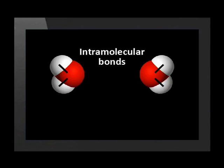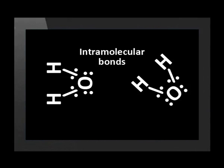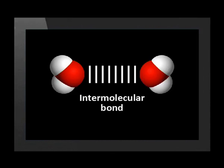In the case of intramolecular bonds, what are the positively and negatively charged particles which attract one another? The positive nuclei of the bonded atoms attract the negatively charged shared electron pairs. In the case of intermolecular bonds, what are the positive and negative charges which attract one another? The answer is positive and negative molecule poles. That is what keeps molecules together.